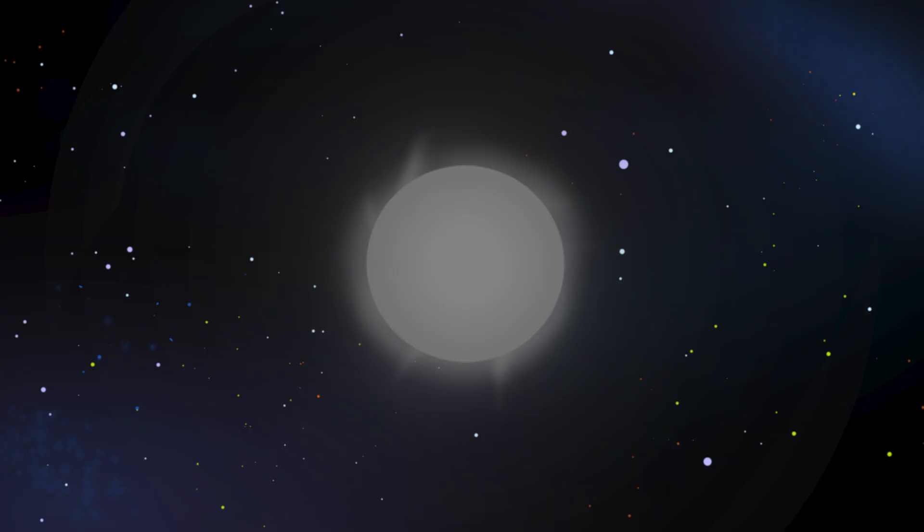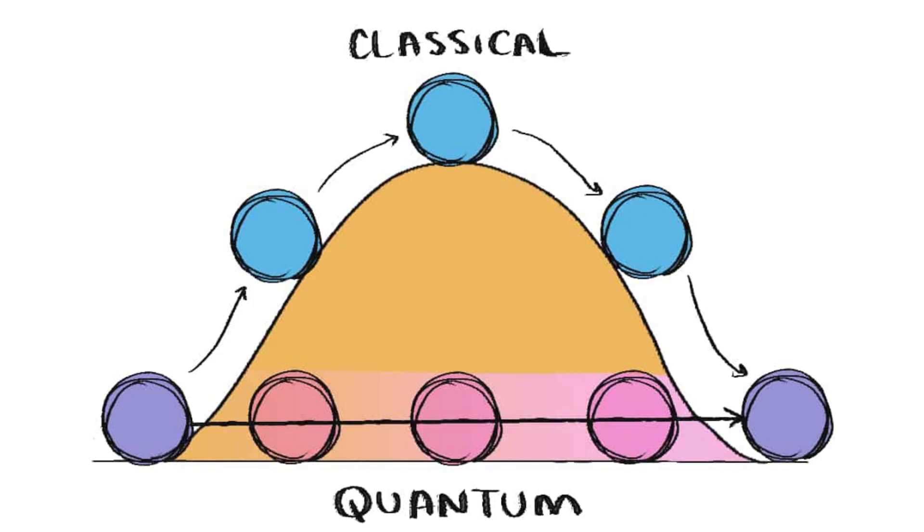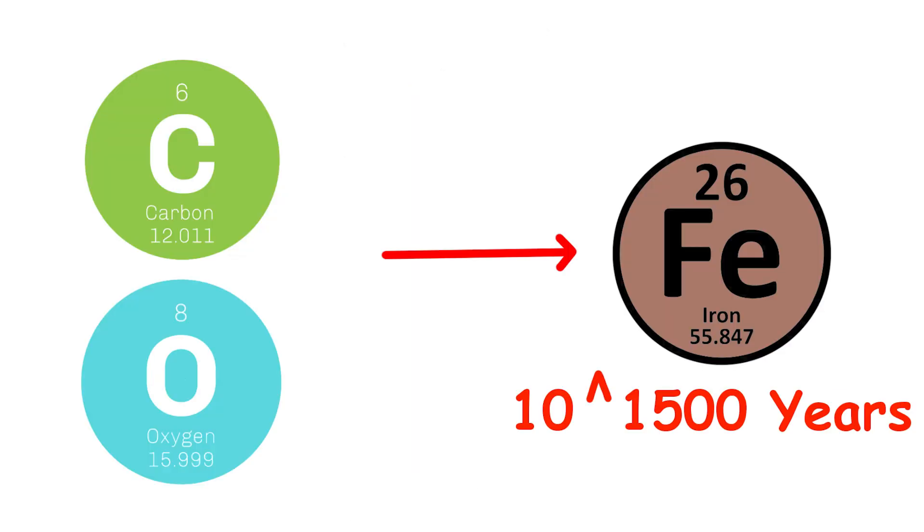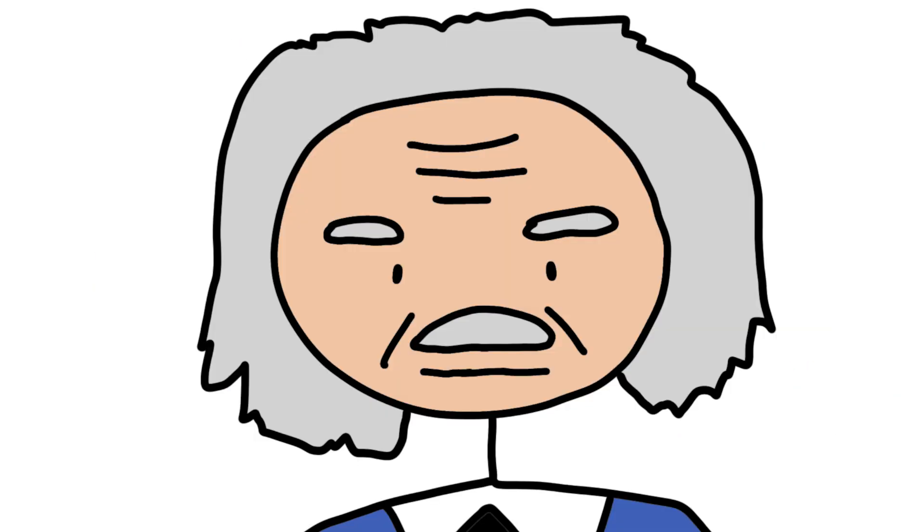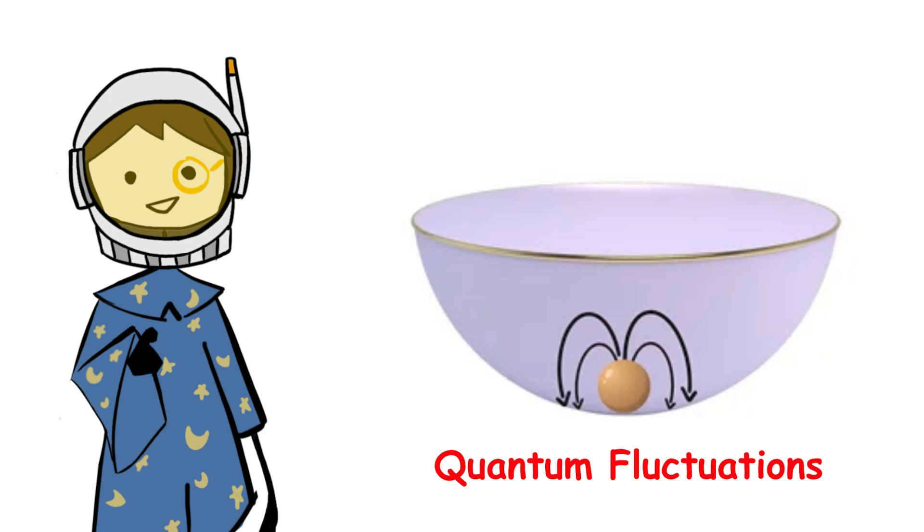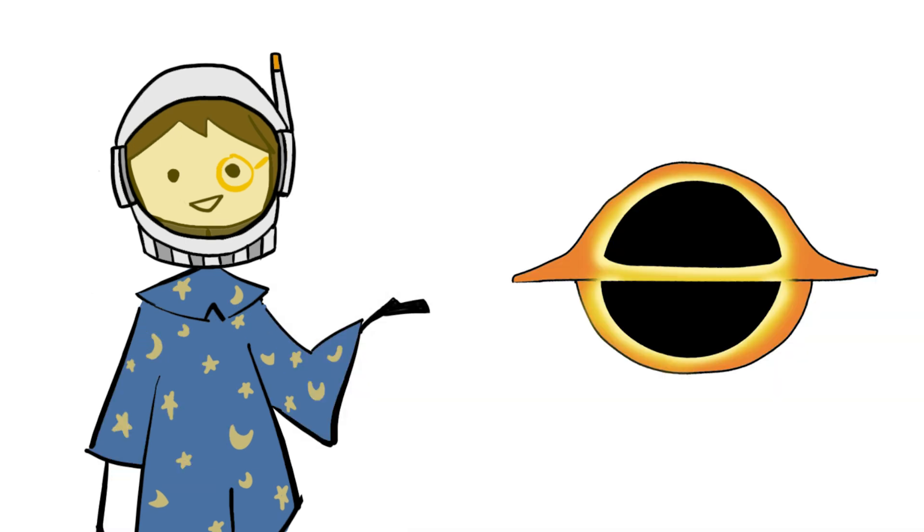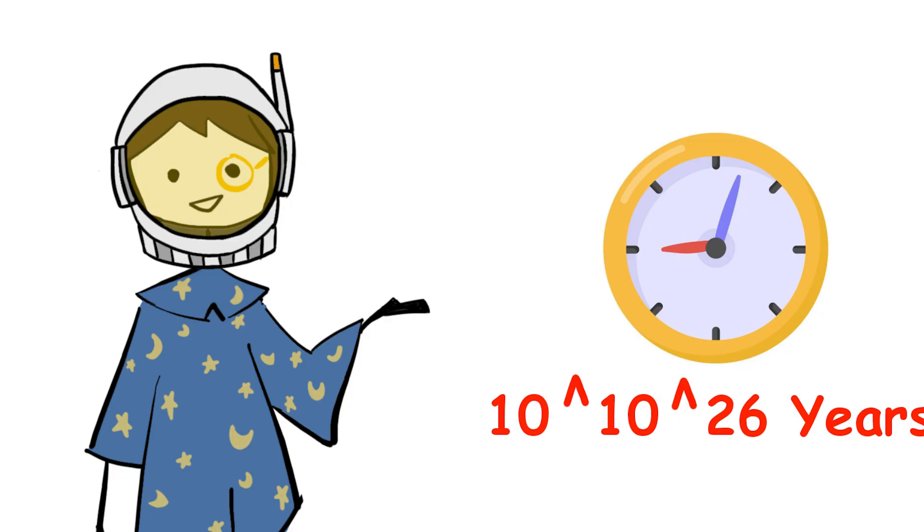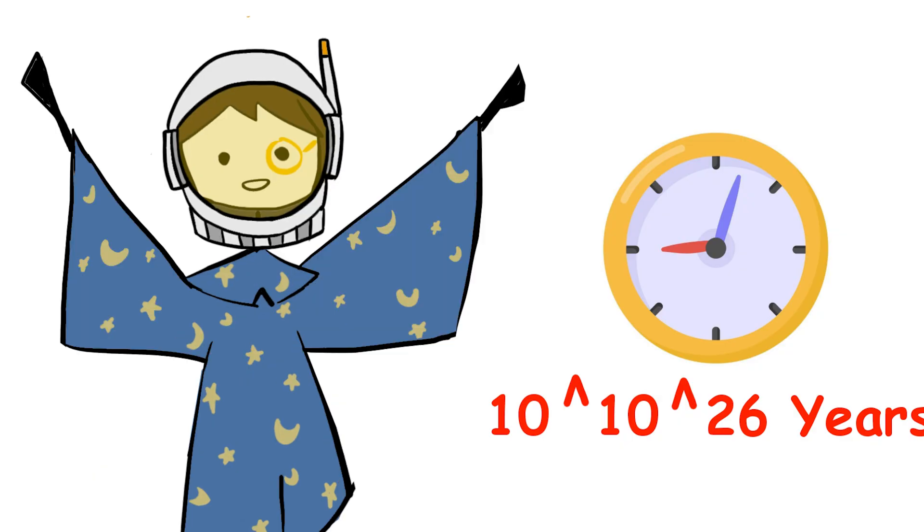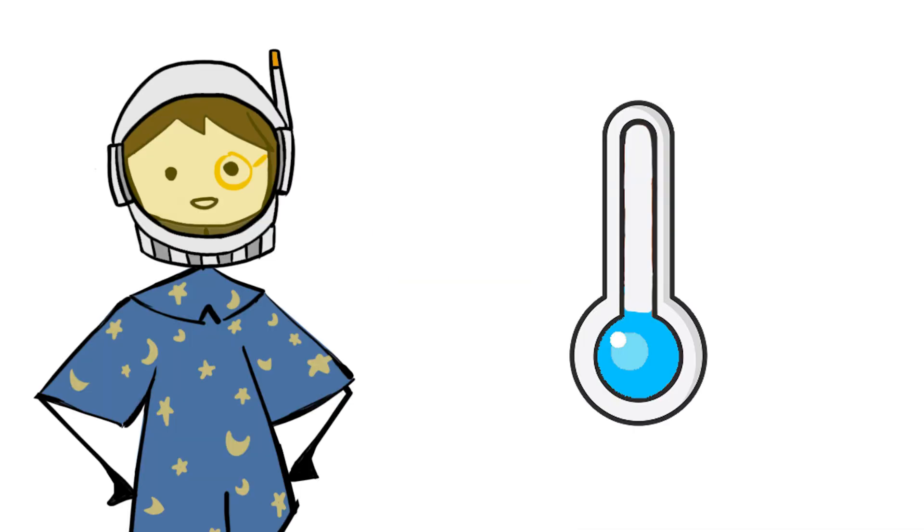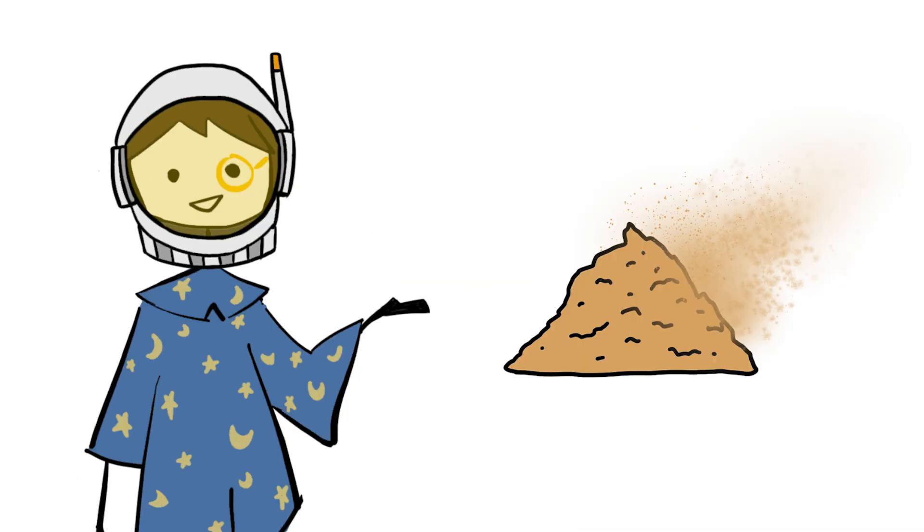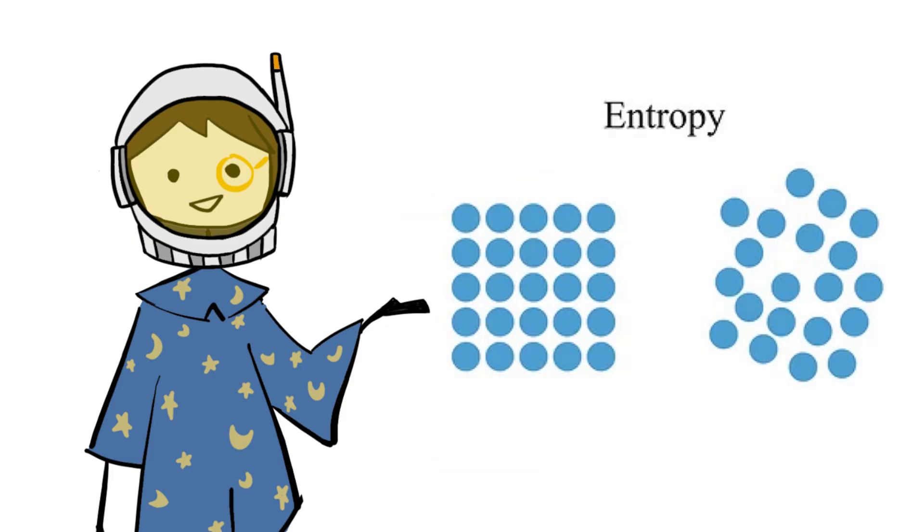Proton decay, if it occurs, would gradually disintegrate the black dwarf over timescales of 10 to the 32nd years. Alternatively, quantum tunneling processes might convert the carbon and oxygen into iron over 10 to the 1500 years, though this is beyond any practical conception of time. Some physicists speculate that random quantum fluctuations could eventually cause the black dwarf to collapse into a black hole. But the timescales involved, 10 to the 10 to the 26 years, are so vast that they defy comprehension. This indicates the ultimate fate of matter in a cooling, expanding universe, where even the remnants of stars succumb to quantum uncertainties and the relentless increase of entropy.